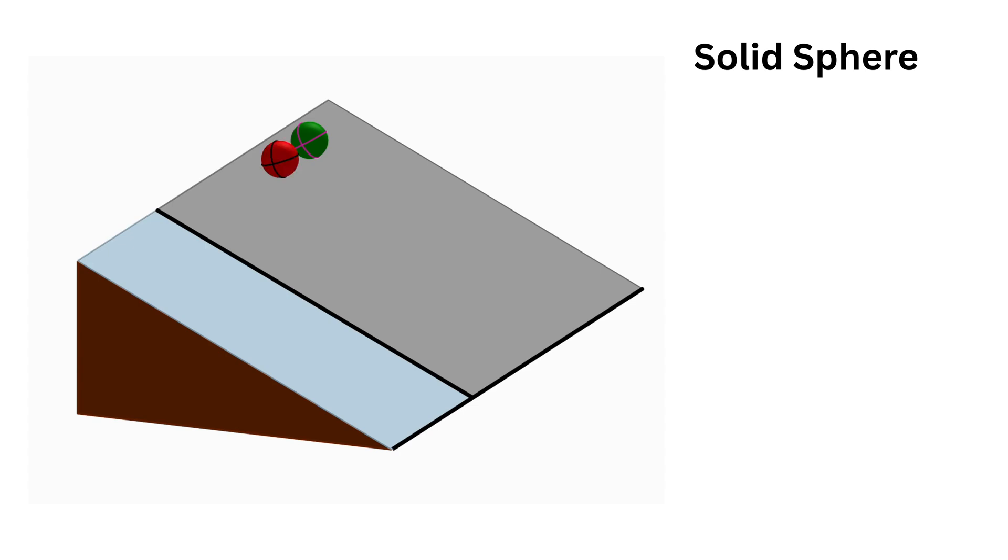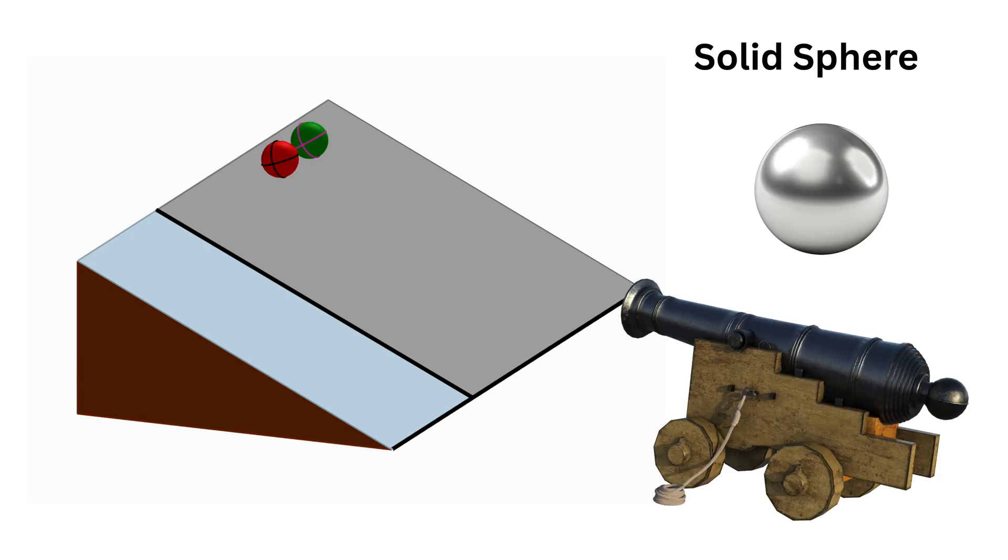Then we have a solid sphere, which you can imagine as a cannonball, which is an iron sphere used historically in warfare.